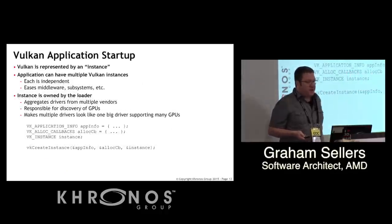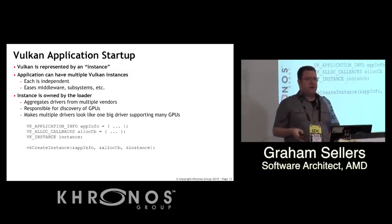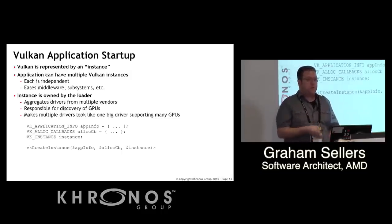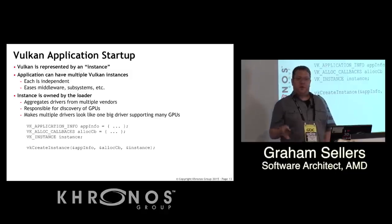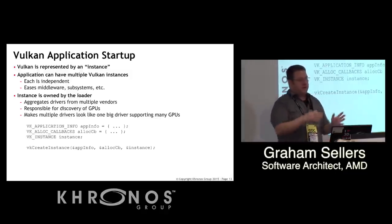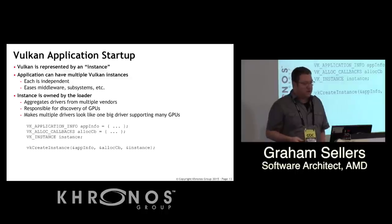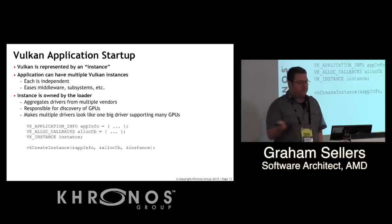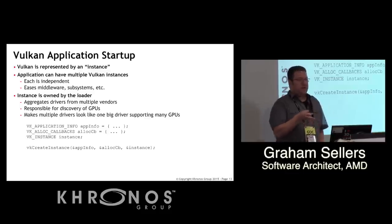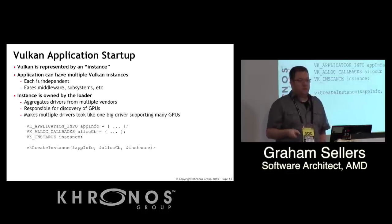The first thing you do is start up Vulkan. Each Vulkan instance is represented by an instance object, and one application can have multiple instances. They're essentially independent — no global state, no global variables, no TLS variables. This eases things like middleware that might want to use Vulkan without needing to worry about sharing device pointers. The instance is essentially the loader. The loader aggregates all the drivers in the system, making it look like one big driver with multiple GPUs behind it.